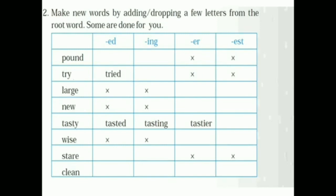Next, make new words by adding or dropping a few letters from the root word. Some are done for you. In the fourth standard, I hope you learned the degrees of comparison. So that also will help you. So here, pound, try, large, new, tasty, wise, stare. These are the root words. So you have to add or drop ed with the root word, ing, er and est. So some are done for you. Here is some cross words are there. That means there is no that kind of words, not that kind of word.